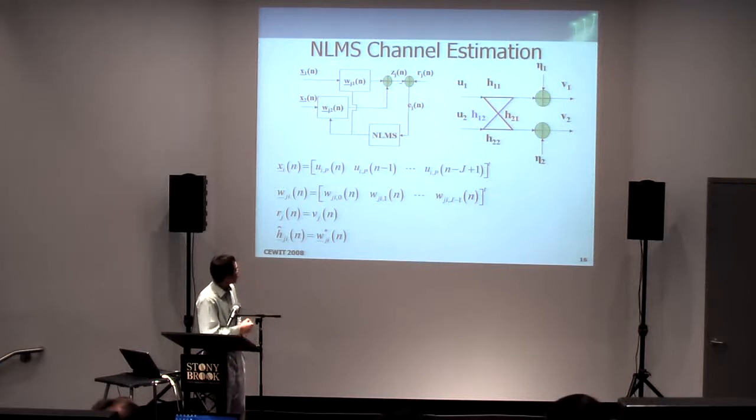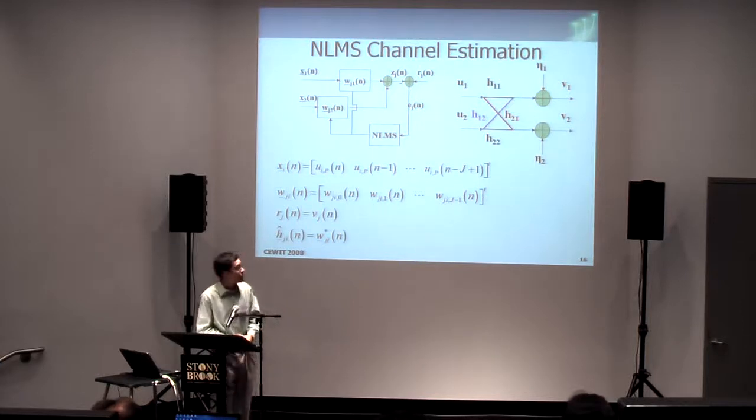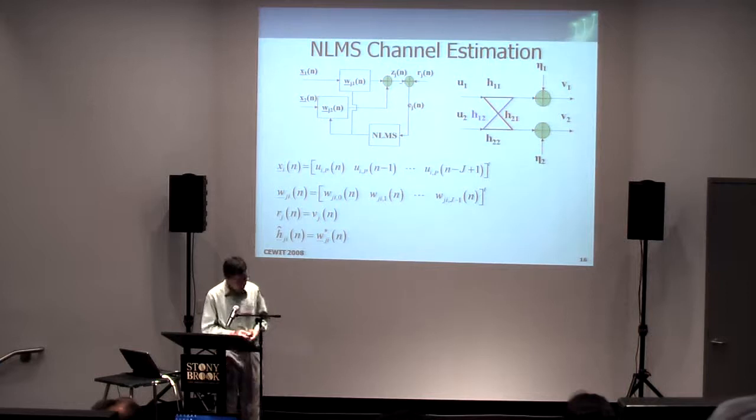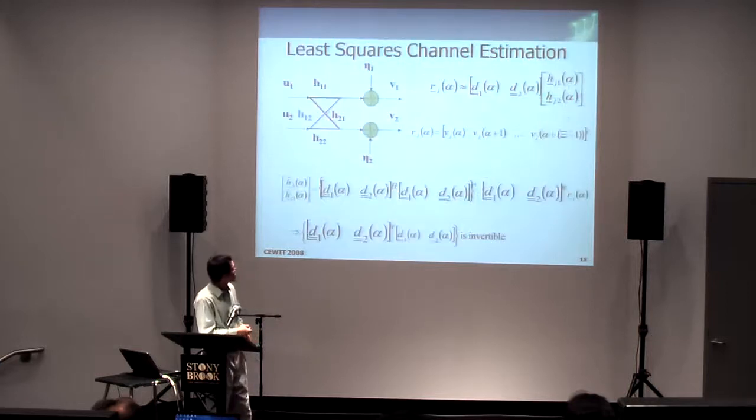For the error that we get in this case, how do we know whether the error is because H11 is off, or H12, our estimation for H12 is off? The reason why we can do this is, again, the orthogonality of the two pilots. Next, we will be looking at the third approach, which is the least-squared channel estimation approach.